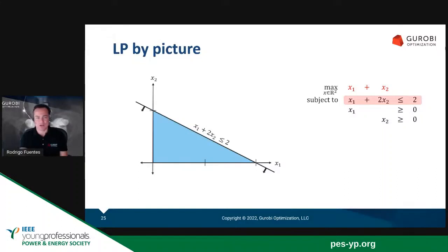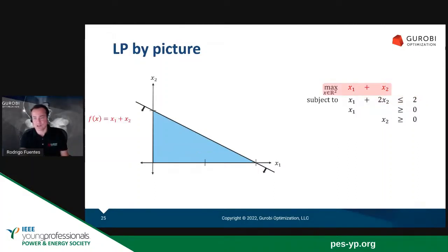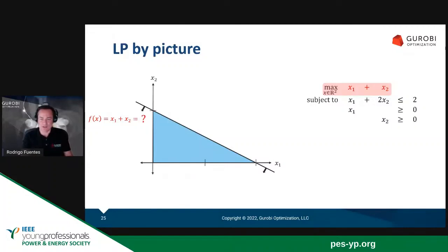So how do we do this? One way is we can draw a line of what X1 plus X2 is for different values. Let's take the function X1 plus X2, our objective function, and assign to that function different values. We want to see what's the maximum value X1 plus X2 can take.